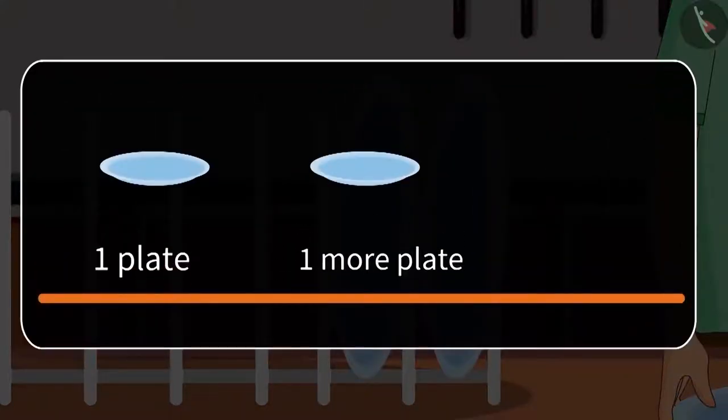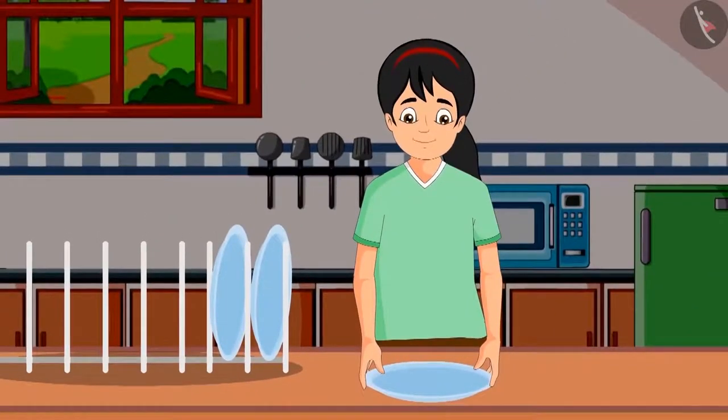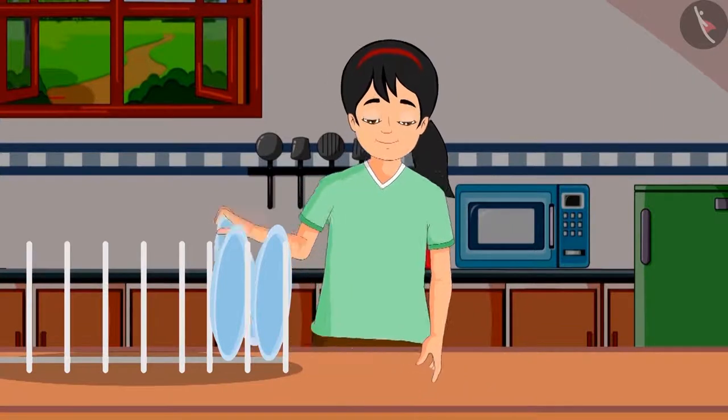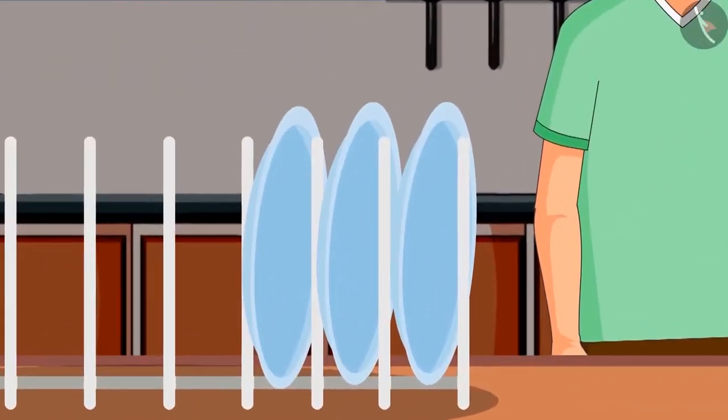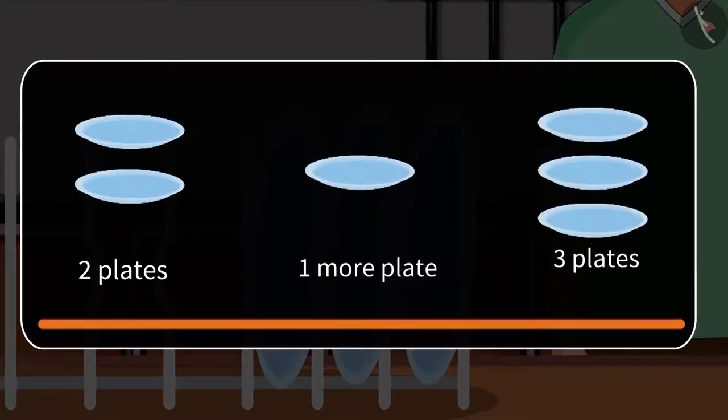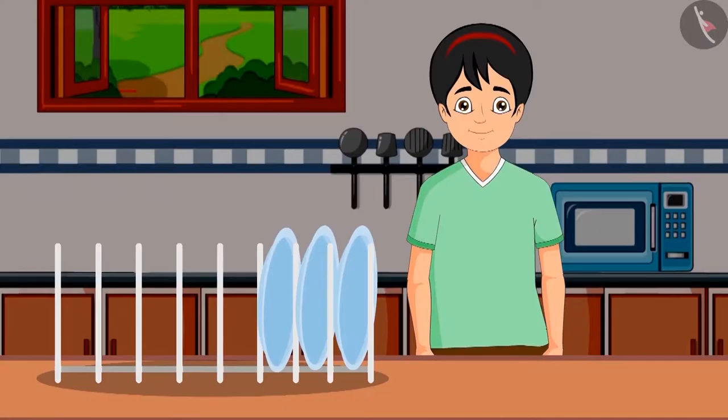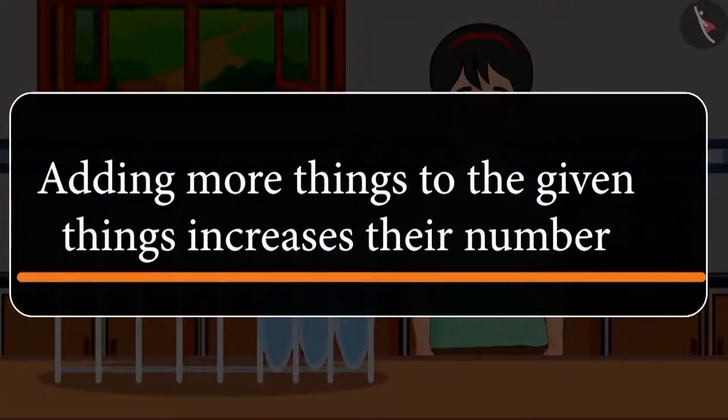She saw one more plate and thought of setting that too on the shelf. There were two plates already. After setting one more plate, how many plates are there on the shelf? That's right, two plates and one more plate is three plates, which means in total there are now three plates on the shelf. So friends, you saw that adding more things to the given things increases their number.